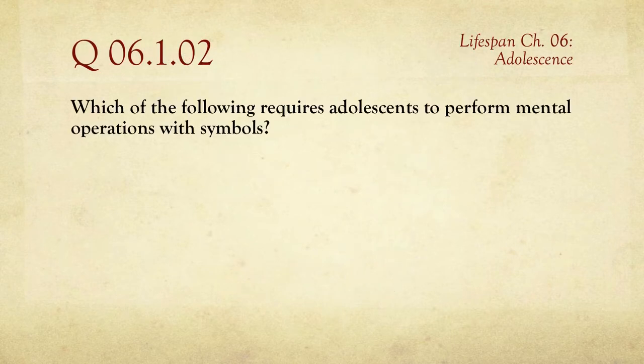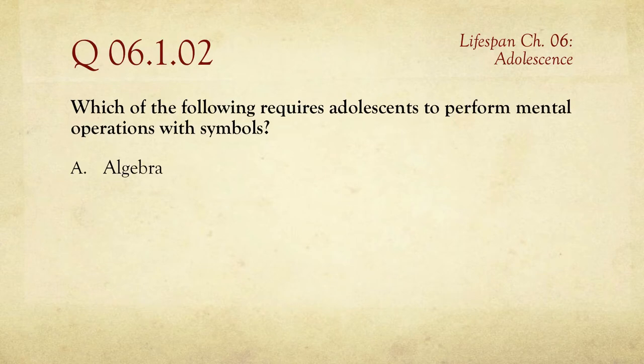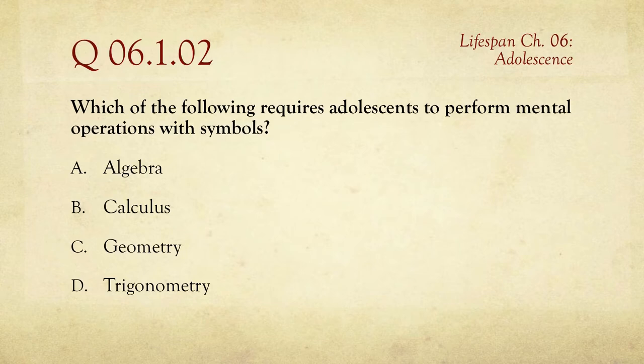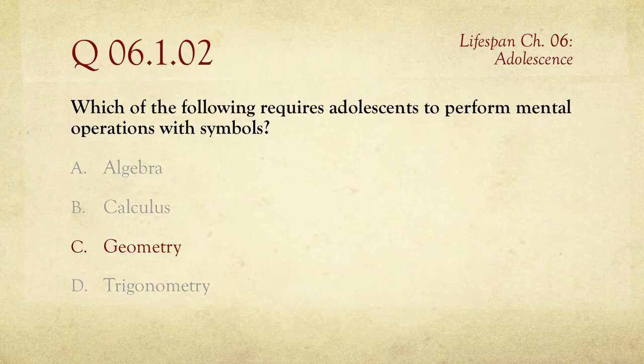Question number two: which of the following requires adolescents to perform mental operations with symbols? The choices are algebra, calculus, geometry, and trigonometry. Had I not read the book, I would have thought all of these required working with symbols like X. The one that gets you credit on the quiz is C, geometry.